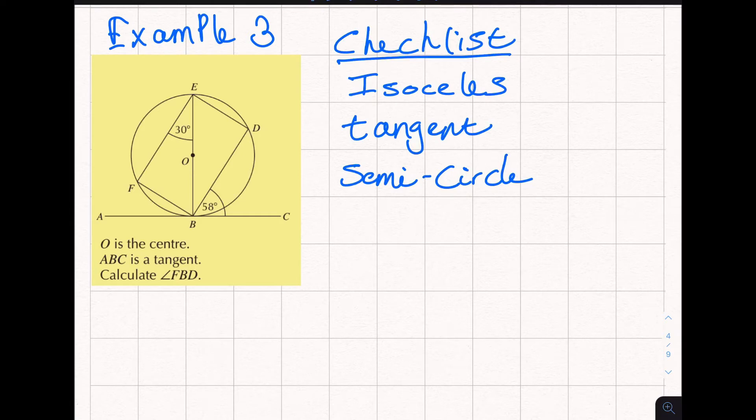Example 3. ABC is a tangent. Calculate angle FBD. So we're trying to identify our angle first. FBD, there it is here. So we're looking for this whole angle here. Looking at our checklist then we'll start with tangent. Tangent meets a radius at right angles so I automatically know that these two angles have to add up to 90. So if I do 90 minus 58 degrees we get 32. So I can immediately mark on that side I've got half the question done.